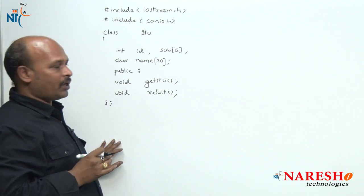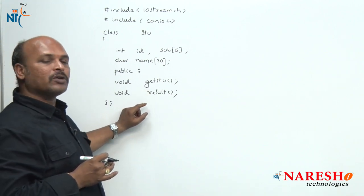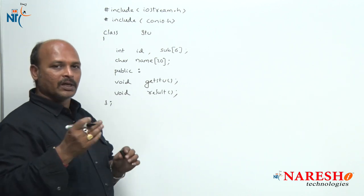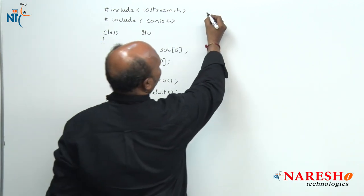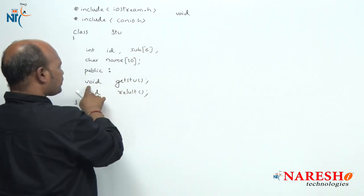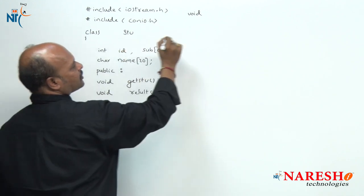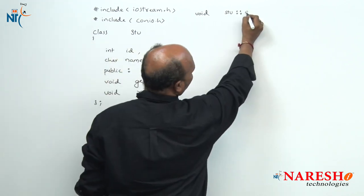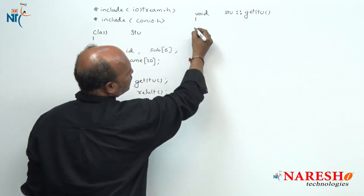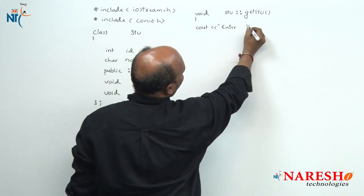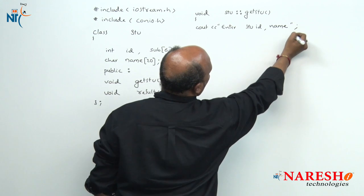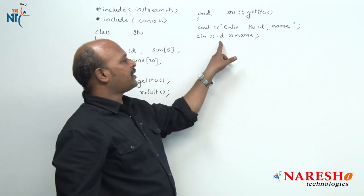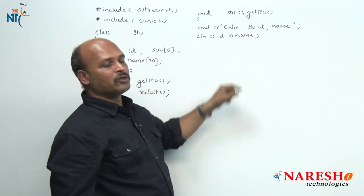The class declaration is completed and now I have to define the member functions outside of the class. When defining a member function outside the class, we start with the class name and scope resolution operator. The return type is void, then the class name student with scope operator, and then the function name getStudent. Here I want to input the data: cout for entering student id and name, then cin for id and name.